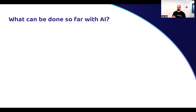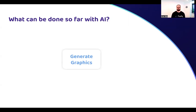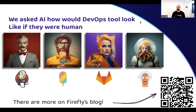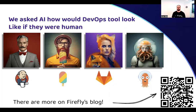What is the first thing that comes to your mind when we ask what AI is capable of? You got it right — AI can create amazing images. And this is exactly what we did at Firefly. We asked AI how our beloved tools in the DevOps ecosystem would look like if they were human. So here we have Jenkins, Crossplane, GitLab, and Argo CD as humans. The results are pretty amazing. If you like it, we have 20 more published in our blog — you can scan the QR code to see all the other tools.